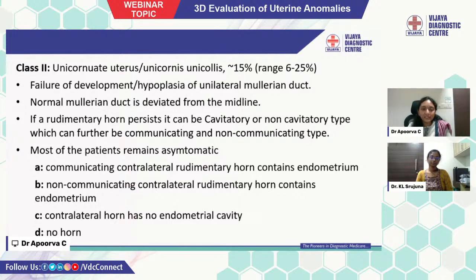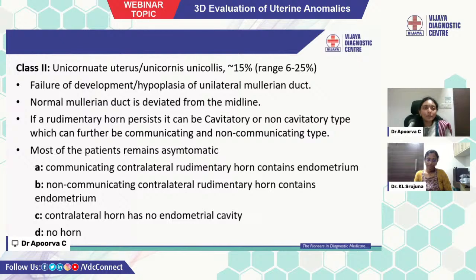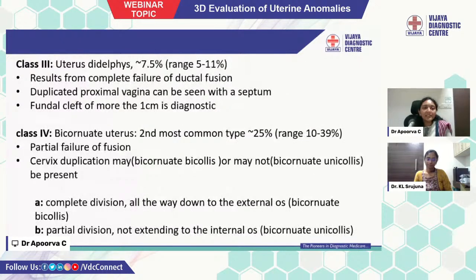Most patients with unicornuate uterus remain asymptomatic. These are divided into: communicating with contralateral rudimentary horn containing endometrium; non-communicating with contralateral rudimentary horn containing endometrium; contralateral has no endometrial cavity; and no horn. Class 3 is uterus didelphys, ranging around 7.5%, resulting from complete failure of ductal fusion. Duplicated proximal vagina can be seen with a septum. A fundal cleft of more than 1 cm is diagnostic.